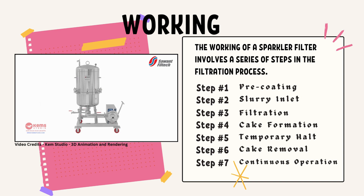The last step is effluent discharge — the clarified liquid, now free from solid particles, is discharged as the final product or sent for further processing. To summarize, the sparkler filter uses horizontal plates, filter medium, and sparklers to allow efficient gravity filtration. The pre-coating step and periodic removal of the cake layer contribute to the filter's effectiveness in removing fine solid particles from liquids, commonly used in pharmaceutical, chemical, and food processing industries.